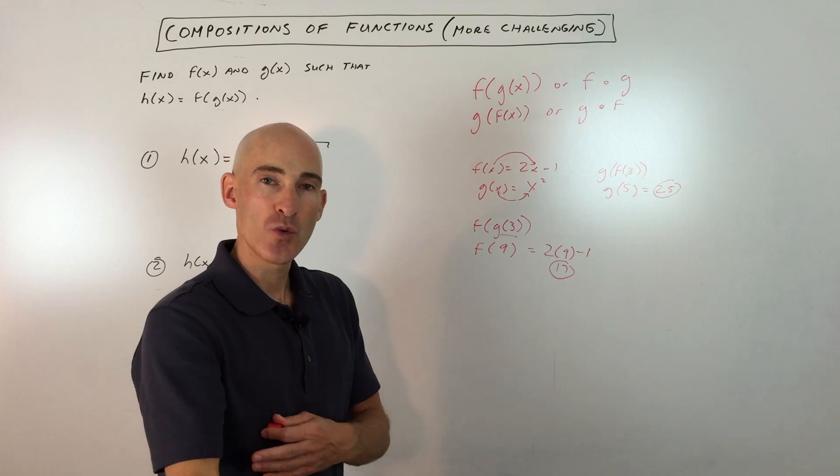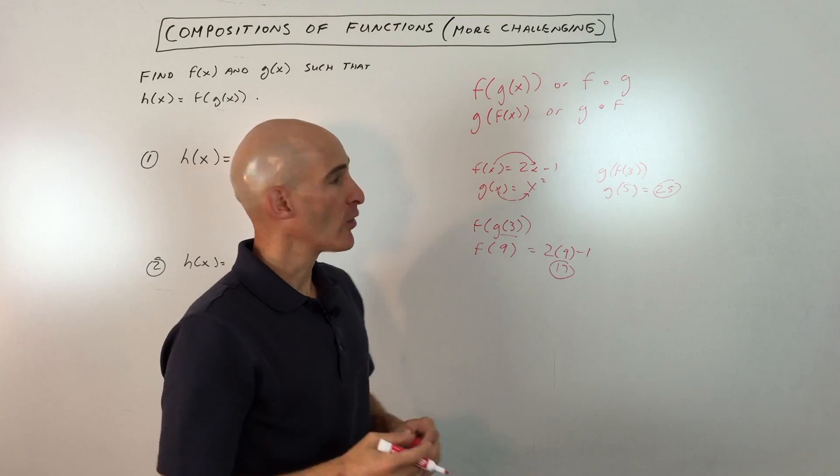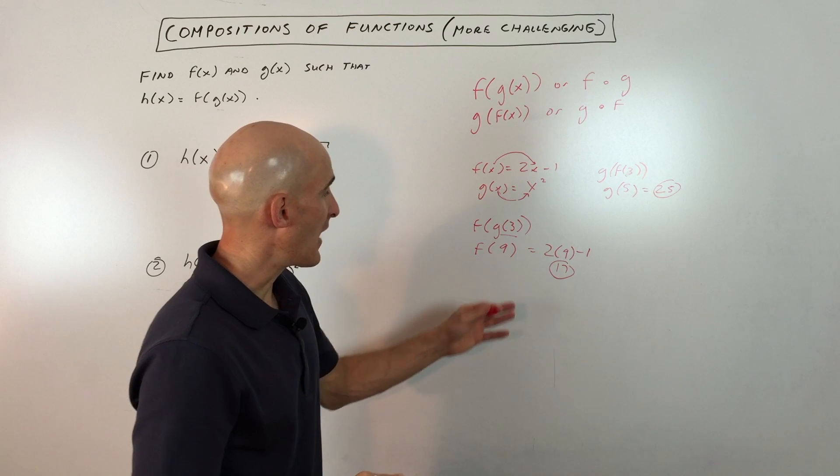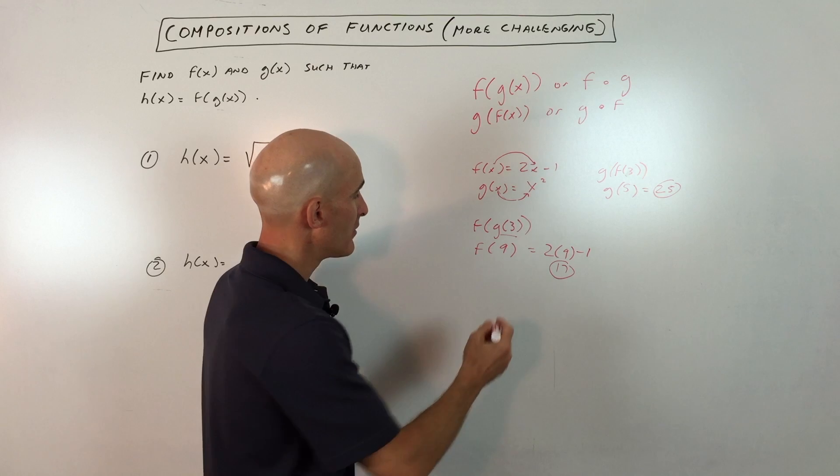The idea is you do one function then another, and sometimes you can do 3, 4, 5 of these compositions. Here I used specific numbers like 3 or 5 or 9, but now we're going to do it in a generic sense.